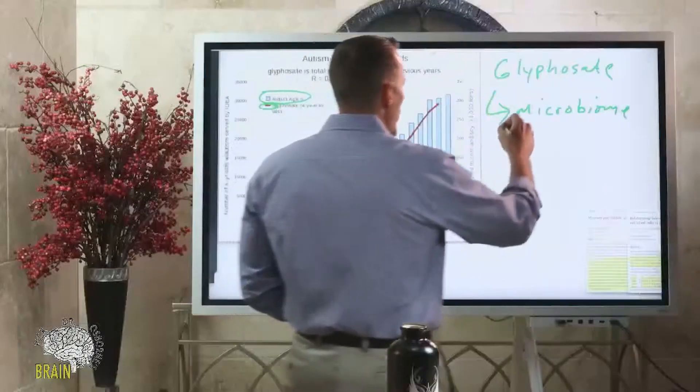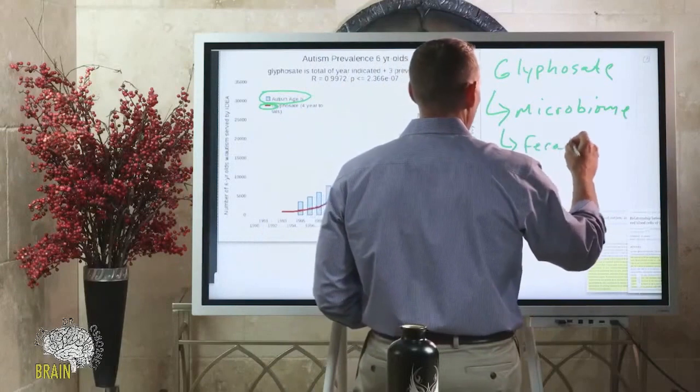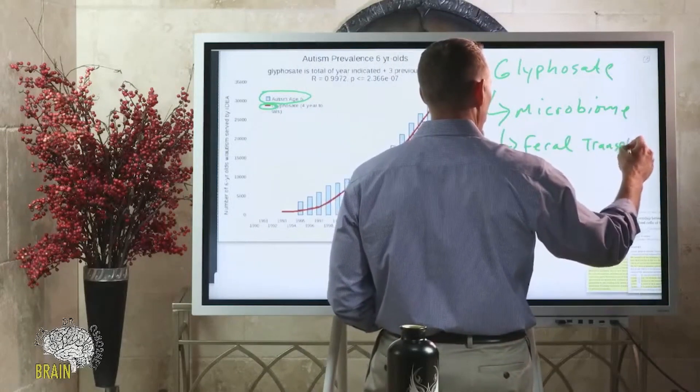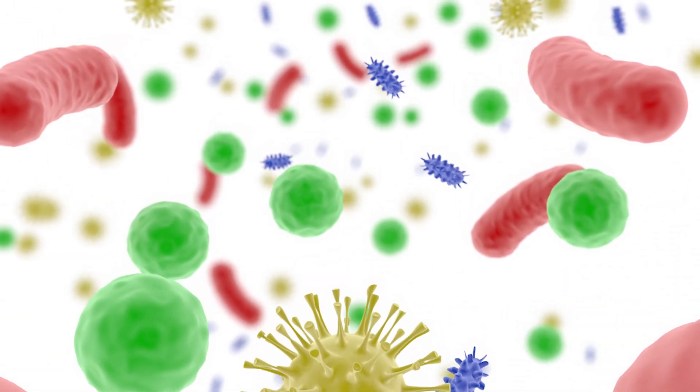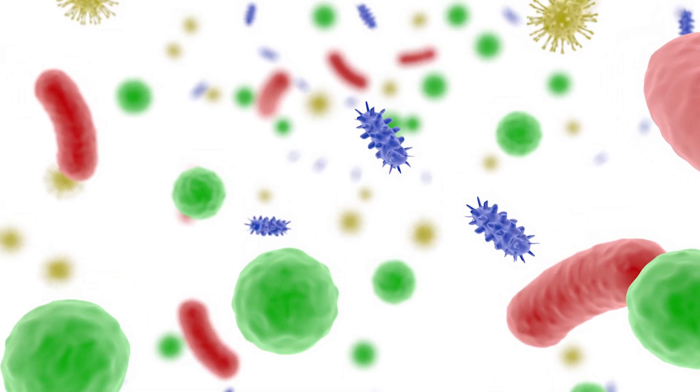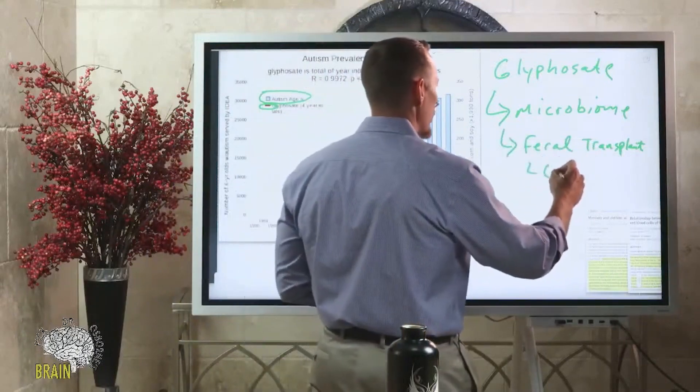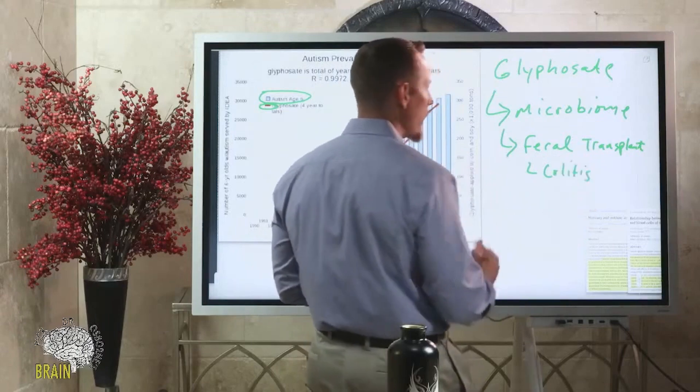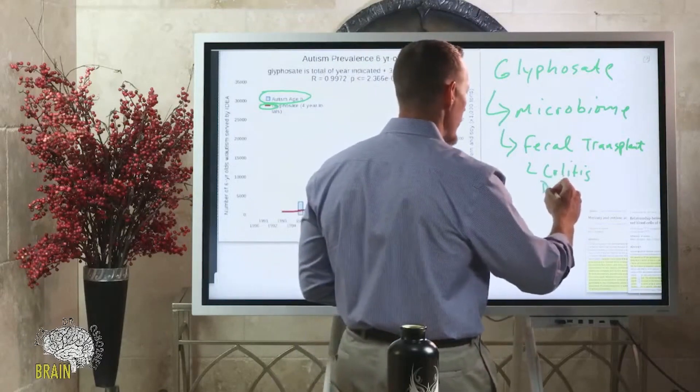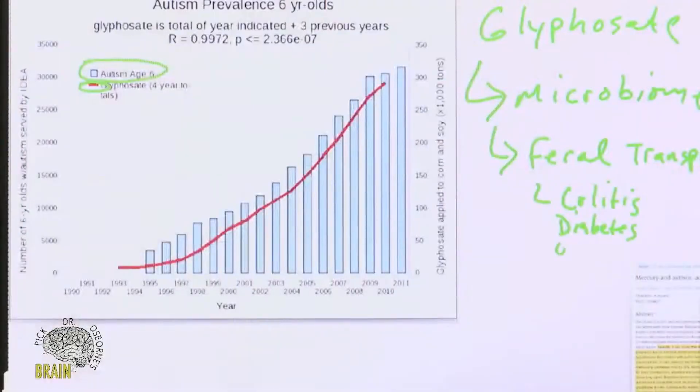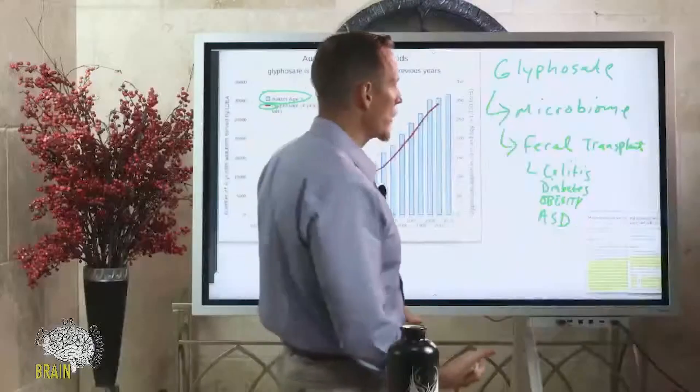We're now seeing, many of you may have heard of fecal transplants. This is where you take the bacteria from a healthy individual and transplant it fecally, rectally, into another patient to see whether or not it can impact them. We're doing fecal transplants now in diseases like colitis or intestinal inflammation and finding dramatic changes. We're seeing these same types of changes in people with diabetes and obesity, and we're seeing these changes in kids with autism spectrum disorder. So taking healthy bacteria from a healthy individual and implanting it into a diseased individual and seeing improvements.